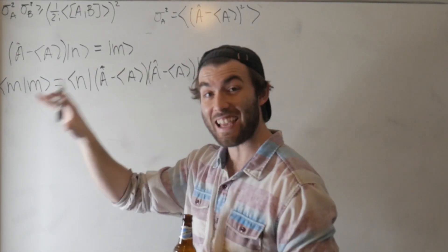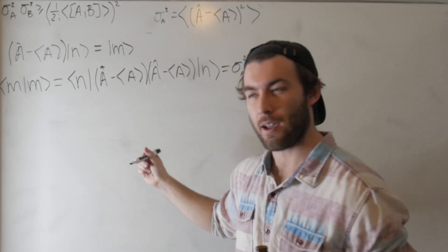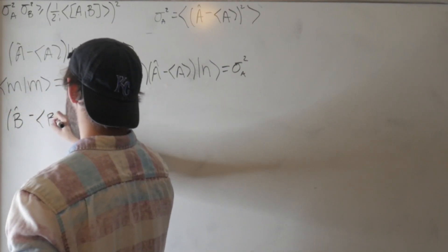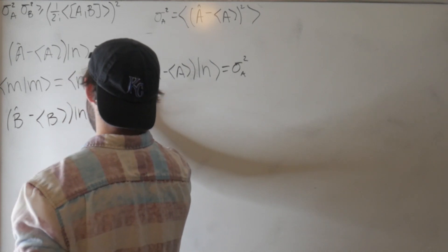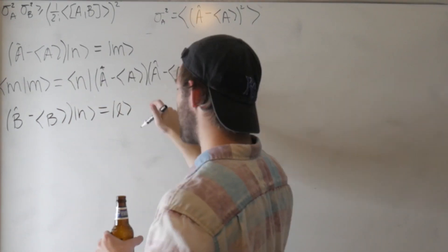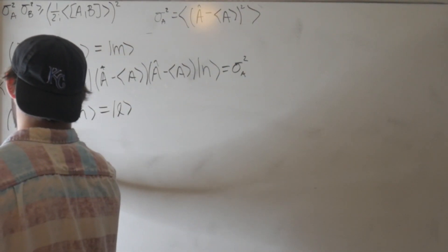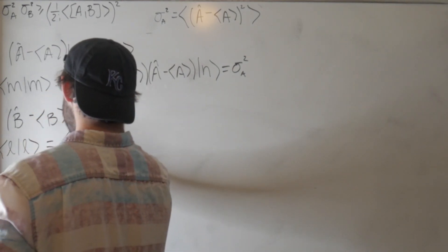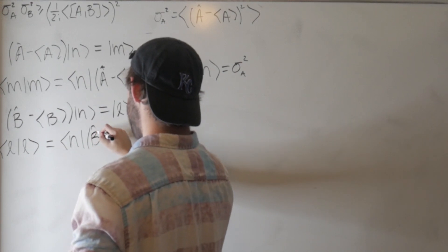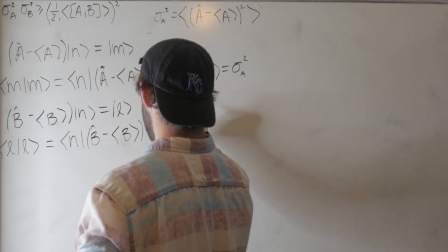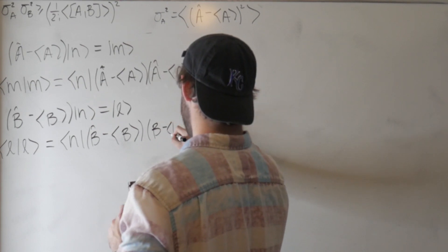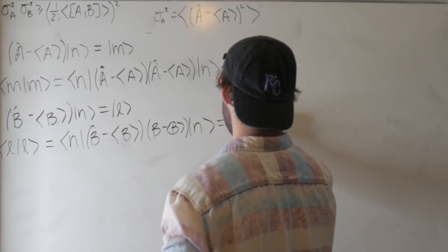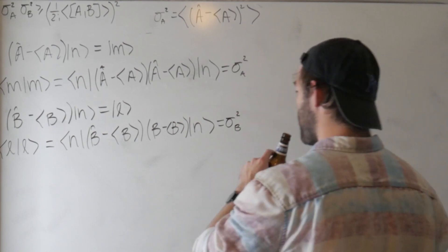Now let's do the same for another operator B acting on the same state |n⟩. We define (B minus the expectation value of B) acting on |n⟩ to give a new state |l⟩. Going through the exact same process, ⟨l|l⟩ gives us sigma_B squared.